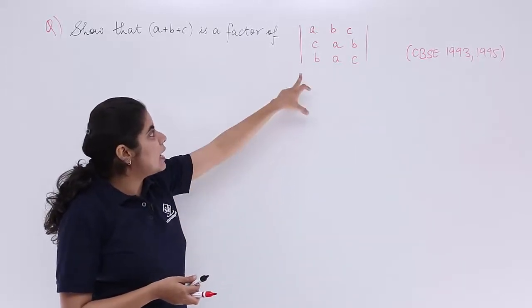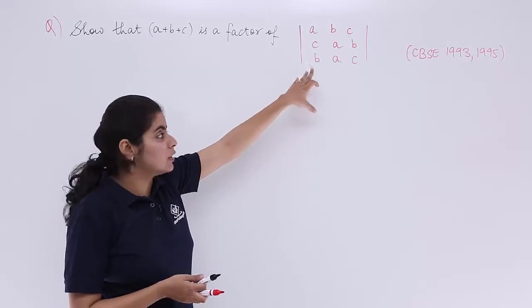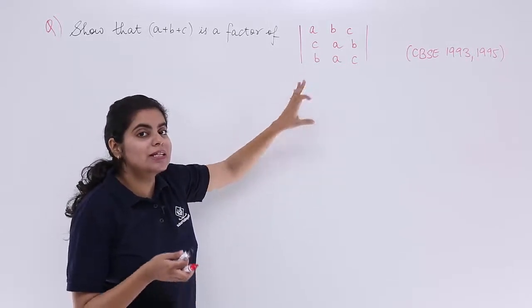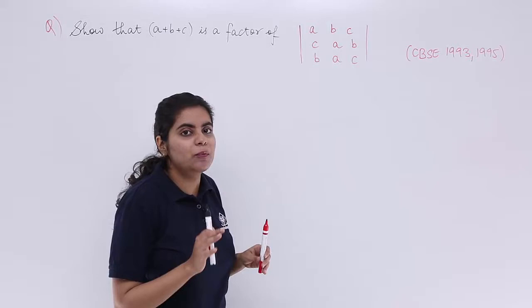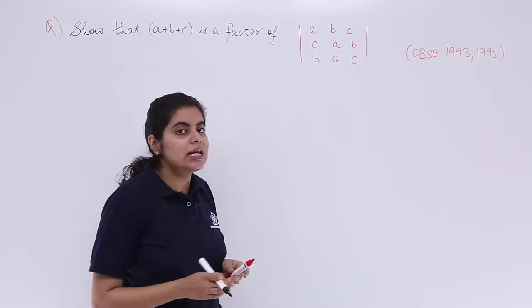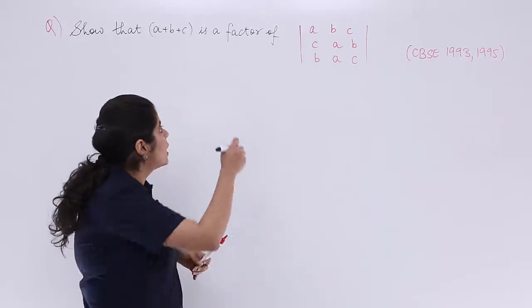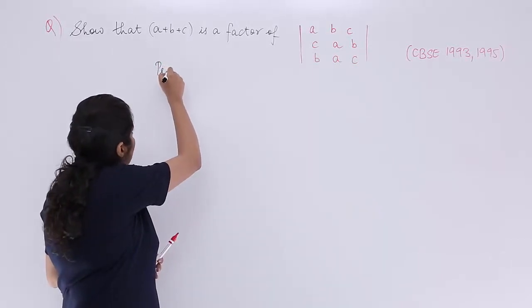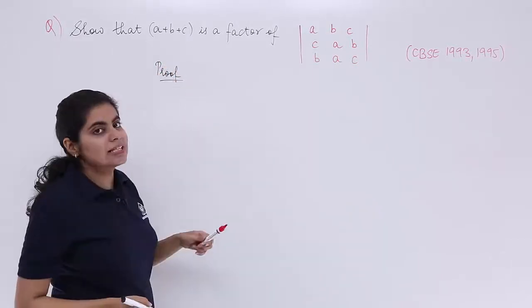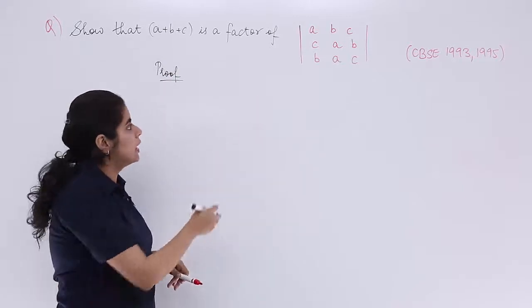That means these can be added up and we have something called as a plus b plus c that we can get. That is what I am going to do. What I mean to say is let's add up the columns together in the proof of this question. So the proof says that I am going to add these columns together.